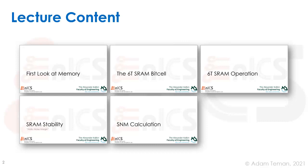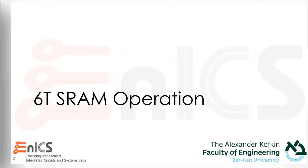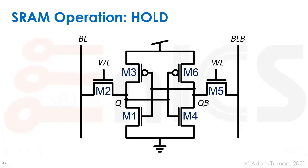In the last lecture we talked about the 6T SRAM bit cell. Now let's go deeper into the operation of the bit cell itself. We'll start with the general easy case of hold. We have M3 and M1 making the left-facing inverter, M6 and M4 making the right-facing inverter, and the access transistors M2 and M5.